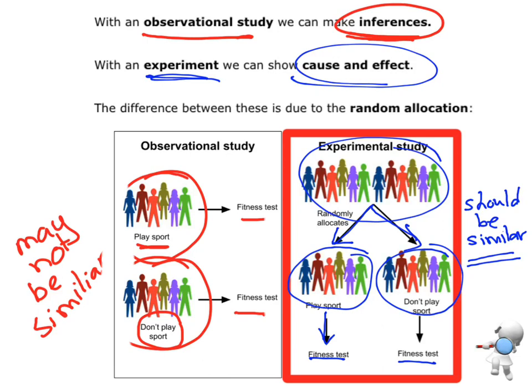And the reason that we can show that doing this causes this to happen is because of that random allocation component. And that's what makes this the gold standard.